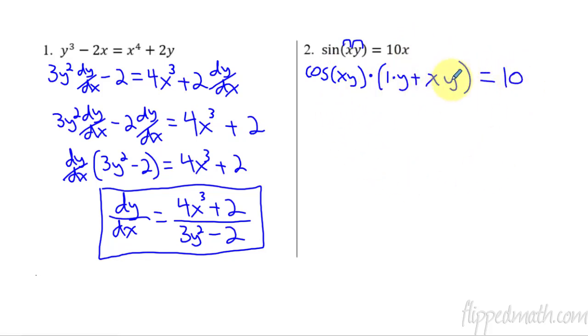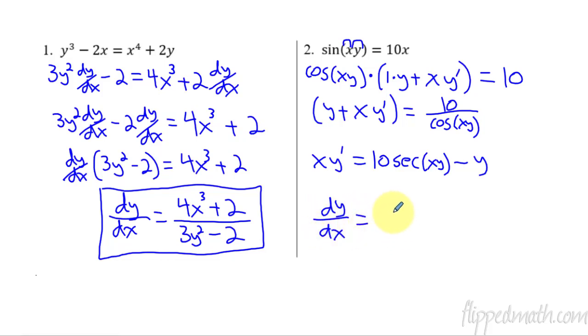So we did the chain rule here, the product rule and the chain rule here. So then we say equals the derivative of 10x is just a 10. Now we're trying to solve for dy dx, or in other words, this y prime. So I will divide both sides by cosine xy, and that leaves me with just this, which is y plus x y prime, and then that equals 10 divided by cosine of xy. So now we have this thing. I can subtract the y over, so I get x y prime equals, now watch what I do here. I'm going to write this as 10 secant xy. Instead of writing it as divided by cosine xy, you could just use the reciprocal identity and write it as secant xy. And then what was I doing? I subtracted the y over, so that's minus y. And then my final answer, the y prime, or in other words, dy dx, because that is y prime, is equal to that whole thing, 10 secant of xy minus y all over x.